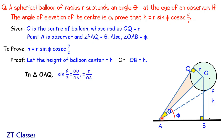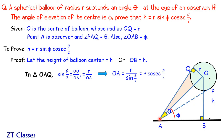In triangle OAQ, by the theorem of circles, line AO is the angular bisector for angle A, so this particular angle is theta by 2. Therefore sine theta by 2 equals perpendicular over hypotenuse, which is OQ over OA. Since OQ is the radius r, we get sine theta by 2 equals r over OA, or OA equals r over sine theta by 2, which is the same as r times cosecant theta by 2.